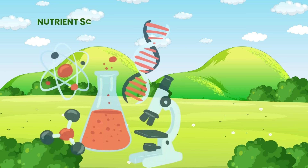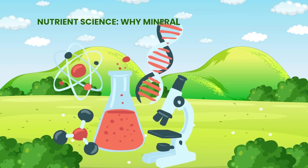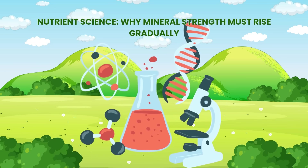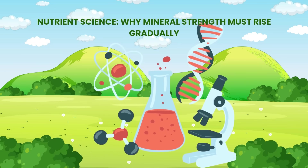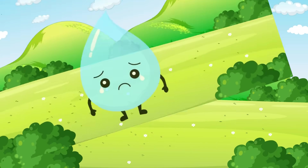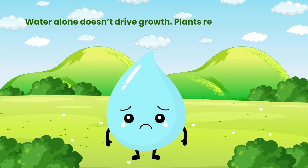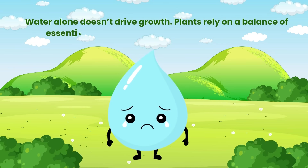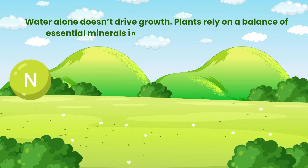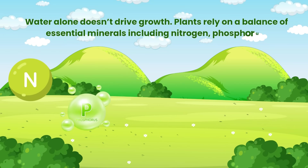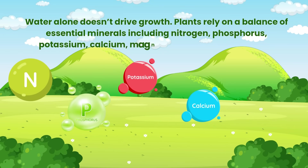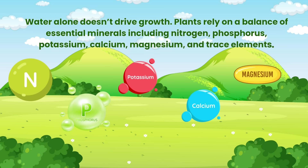Nutrient science: why mineral strength must rise gradually. Water alone doesn't drive growth. Plants rely on a balance of essential minerals including nitrogen, phosphorus, potassium, calcium, magnesium, and trace elements.